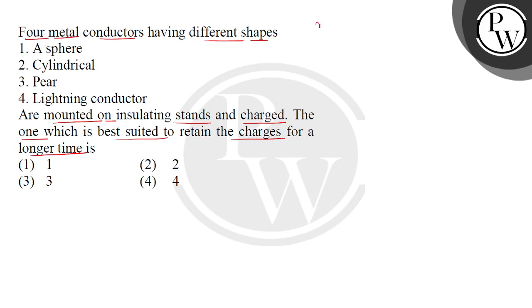So the question mentions four metallic conductors with different shapes. What are these different shapes? One is the sphere, second is the cylindrical